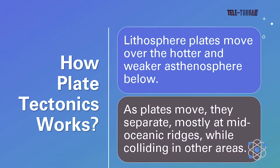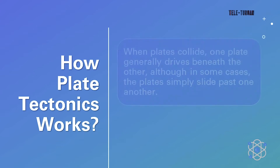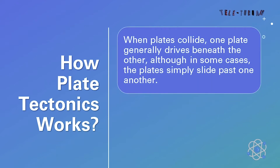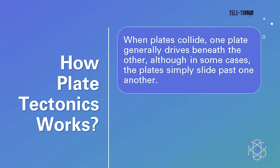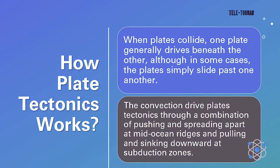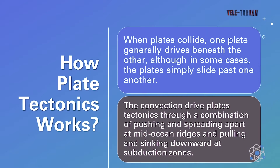The driving force behind plate tectonics is convection in the mantle. Hot material near the Earth's core rises and colder mantle rocks sink. Lithospheric plates move over the hotter and weaker asthenosphere below. As plates move, they separate, mostly at mid-oceanic ridges, while colliding in other areas. When plates collide, one plate generally drives beneath the other, although in some cases the plates simply slide past one another. Convection drives plate tectonics through a combination of pushing and spreading apart at mid-ocean ridges and cooling and sinking downward at subduction zones.